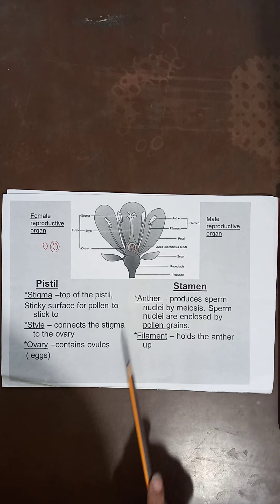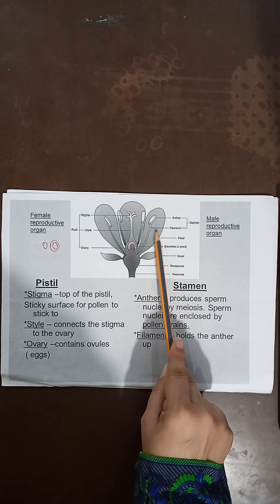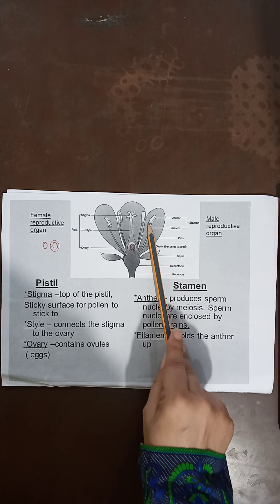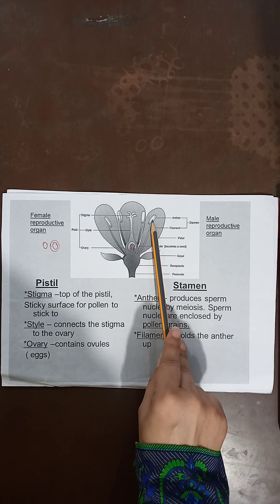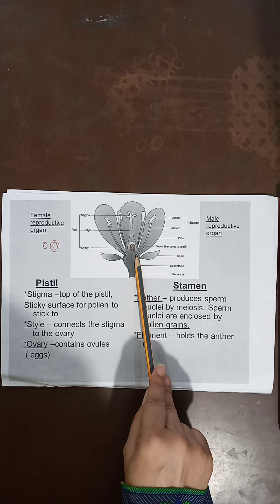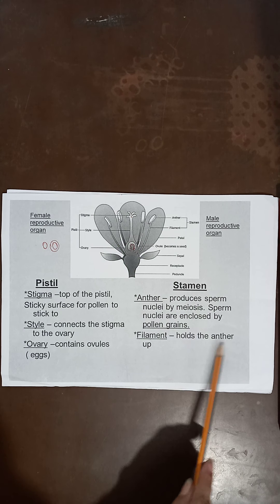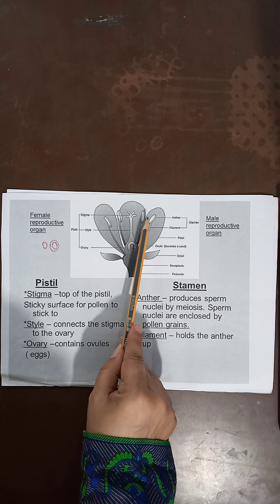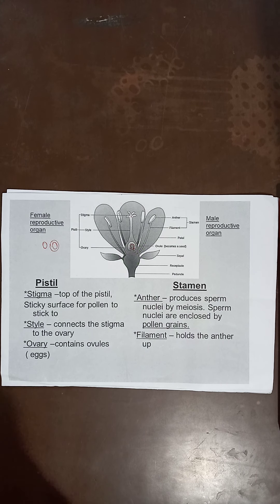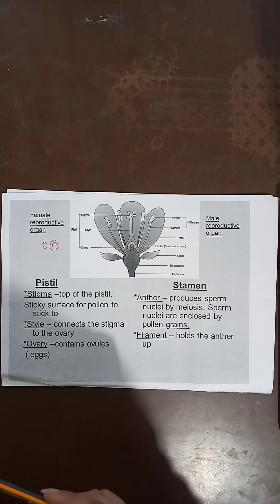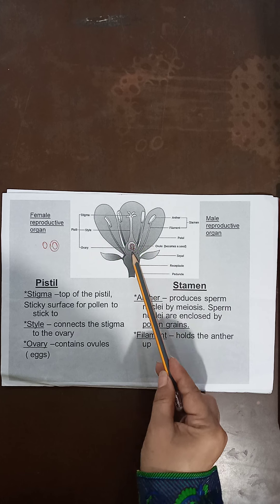The male reproductive organ is called the stamen. Stamen consists of two parts. The upper part is called the anther — it is swollen because it consists of pollen grains, which are the male reproductive cells. The anther is connected to the base of the flower by a filament, which is the long stalk that holds the anther up. By the fusion of pollen grains and the ovule, a zygote is formed which is later converted into an embryo, then a seed, and then the ovary develops into a fruit.